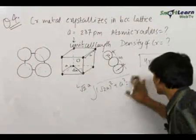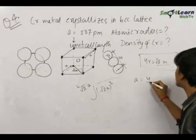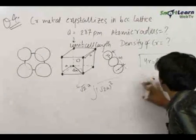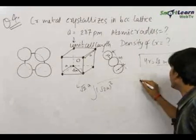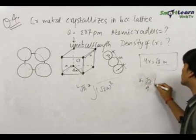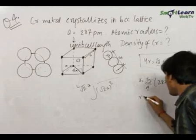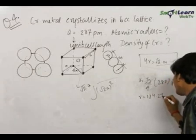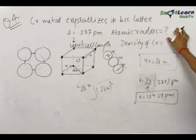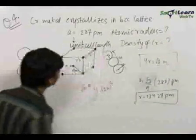Substituting the values, r = (√3/4) × a = (√3/4) × 287 picometers, which gives r = 124.27 picometers. So the atomic radius of chromium comes out to be 124.27 picometers.